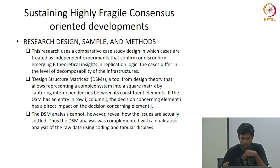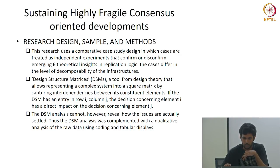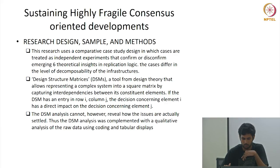The Design Structure Matrix (DSM) is a tool from design theory that allows representing a complex system as a square matrix by capturing interdependencies between its constituent elements. If the DSM has an entry in row i, column j, then the decision concerning element i has a direct impact on the decision concerning j. The DSM analysis was complemented with a qualitative analysis of raw data using coding and tabular displays.